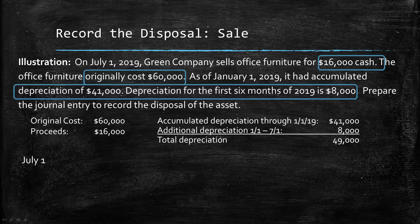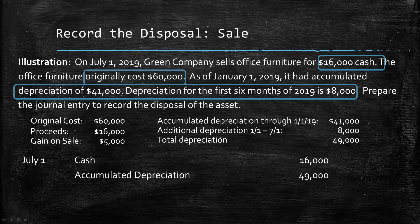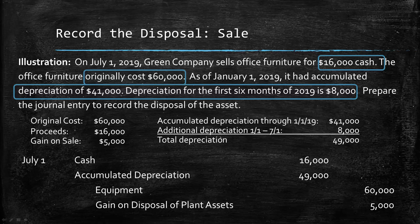Now we can build our journal entry on July 1. We're going to debit cash for $16,000 because we are receiving cash for that furniture, debit accumulated depreciation for $49,000 to remove the accumulated depreciation, and credit equipment for $60,000 to remove it. Lastly, we're going to credit gain on disposal of plant assets for $5,000. It's a credit because the gain is an other revenue.